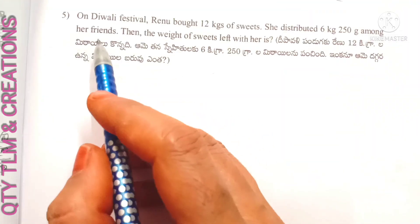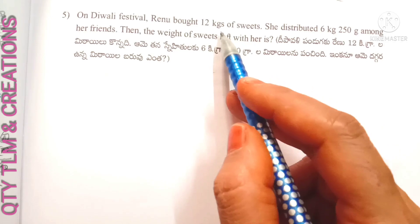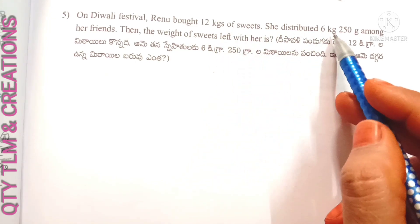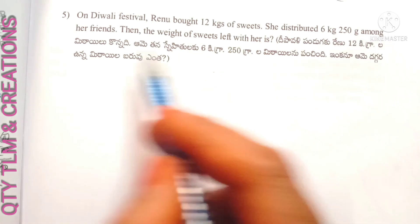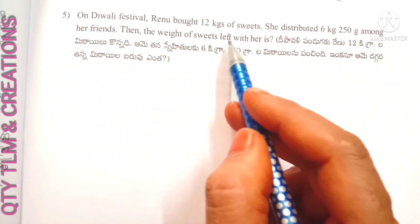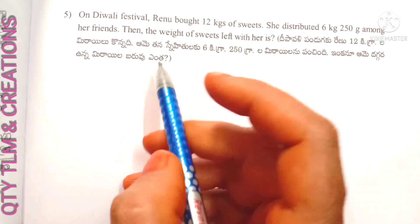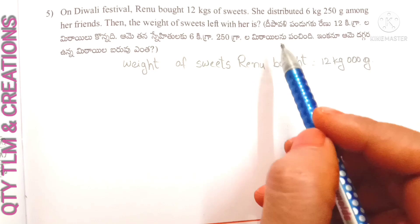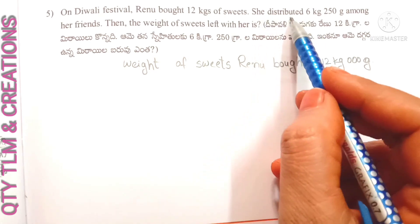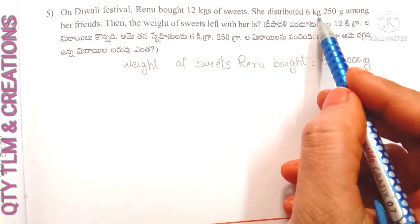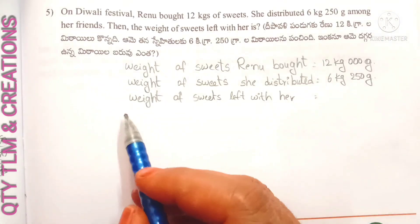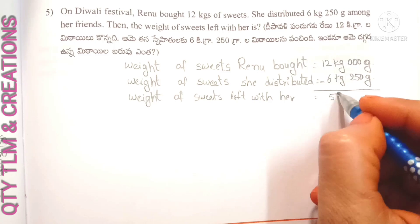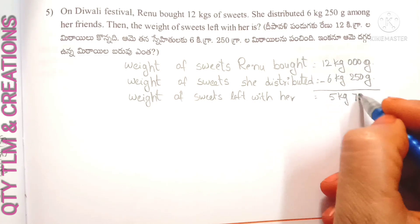Next question: on Diwali festival, Renu bought 12 kilograms of sweets. She distributed 6 kilograms 250 grams among her friends. What is the weight of sweets left with her? Weight of sweets Renu bought equals 12 kilograms. Weight of sweets she distributed equals 6 kilograms 250 grams. Weight of sweets left with her equals 5 kilograms 750 grams.